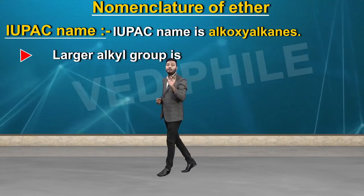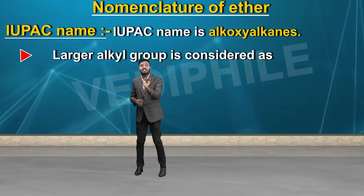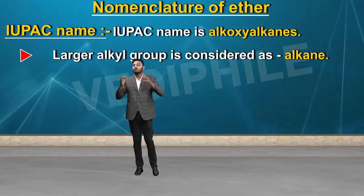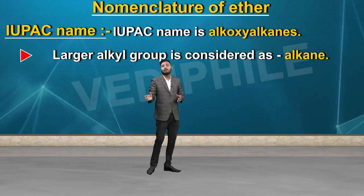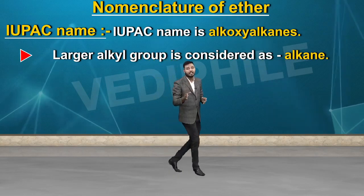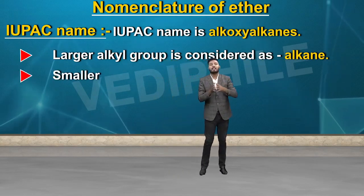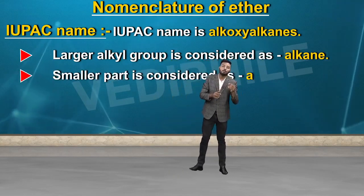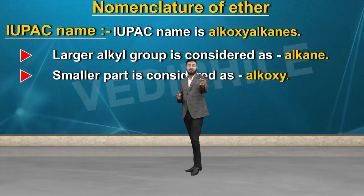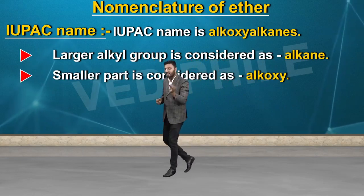In IUPAC nomenclature, the larger group is considered as alkane and the smaller part is called alkoxy. Let's talk about some examples.